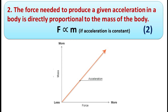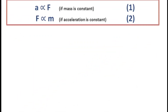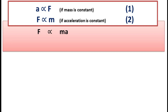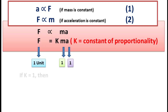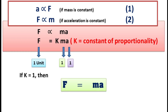Now if we combine equation number one and equation number two, we get: force is directly proportional to mass into acceleration, or F is equal to kMA, where k is a constant of proportionality. A constant is used in every formula to change the proportionality sign to an equal-to sign. If force is 1 unit, mass is 1, and acceleration is 1, then k will also be 1.